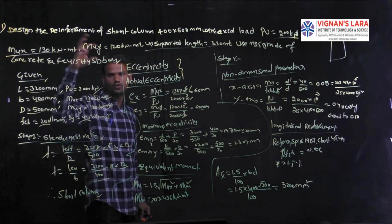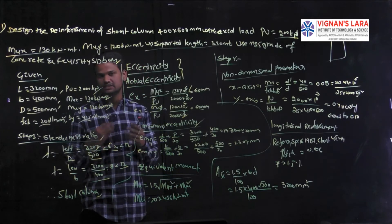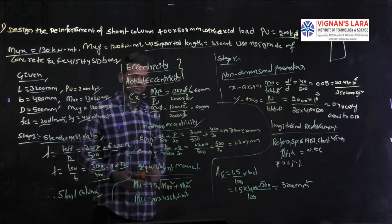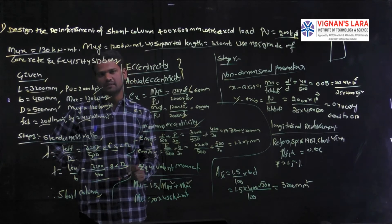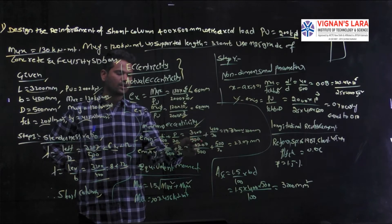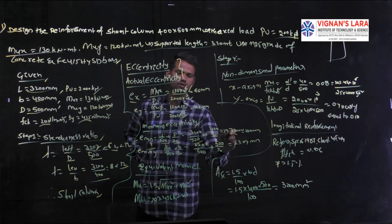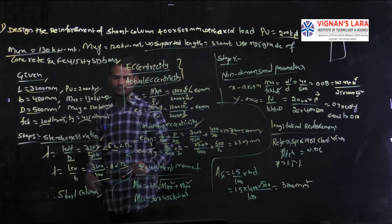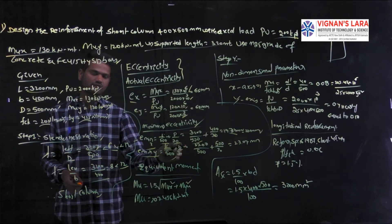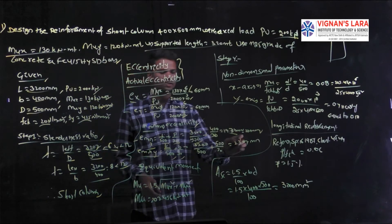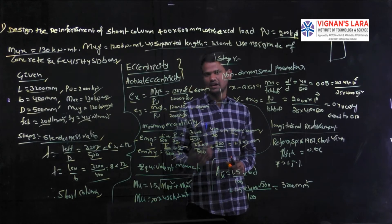According to IS 456:2000, the minimum eccentricity must also be checked. Minimum eccentricity along X: ex_min = L/500 + D/30 = 3200/500 + 500/30 = 19.73 mm ≈ 20 mm. Minimum eccentricity along Y: ey_min = L/500 + b/30 = 3200/500 + 400/30 = 23.07 mm. These minimum eccentricities are used to compute the equivalent moment.